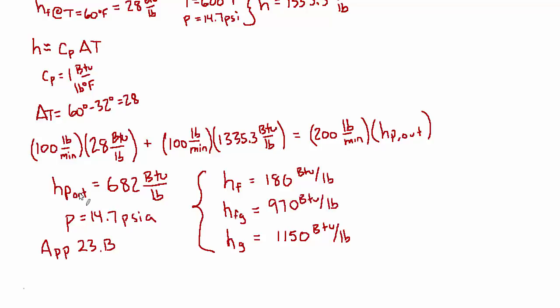Since the enthalpy we solved for, 682, is between H_f and H_g, we know that it is indeed a mixture with a quality somewhere between 0 and 1. It looks like it's a little closer to H_g, so we should expect a quality that's north of 50 percent.